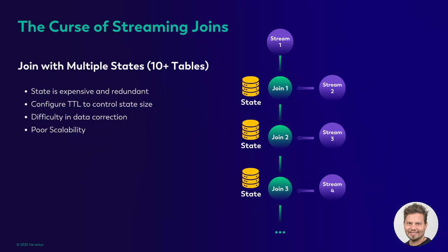Next, let's talk about the curse of streaming joins — it's all about data arrangements. Streaming joins are one of the most common and useful use cases in Flink, but they're really tricky to get right at scale. They require large and redundant states to be kept around. Although you can configure TTL (time-to-live) to control state sizes, this can lead to inconsistencies if expired state is requested again. At scale, this may result in poor scalability, infinite state problems, and overall difficulty in data correction.